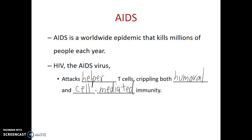This takes us to the end of our discussion of the immune system. The next system that we'll discuss is the endocrine system, or the chemical communication system of the body. See you in the next video.